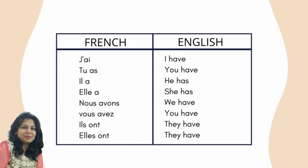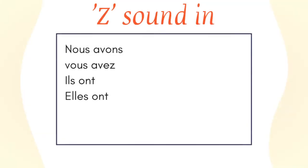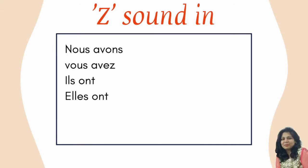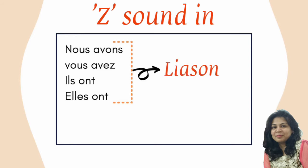Can you hear the sound 'z' when I say: nous avons, vous avez, ils ont, elles ont? So why is this sound pronounced? This is called liaison — the 's' is pronounced with the next word which starts with a vowel. So in 'nous', the next word starts with a vowel: nous avons, vous avez, ils ont, elles ont.